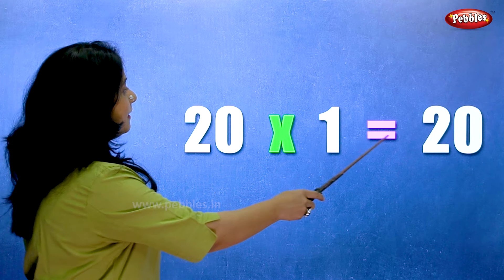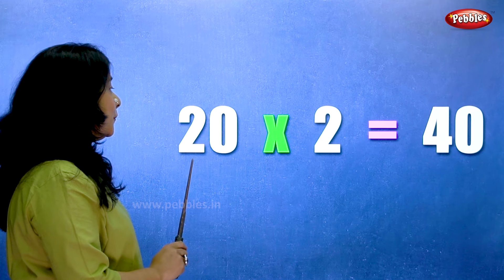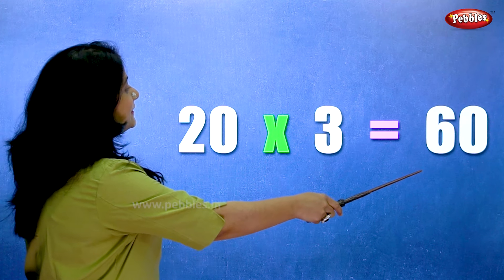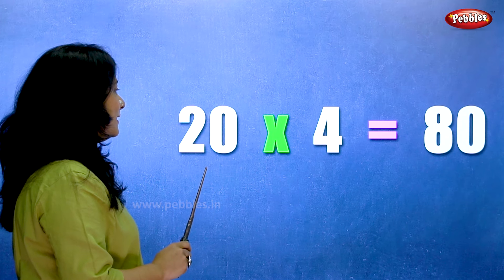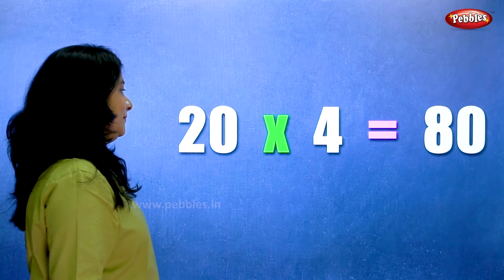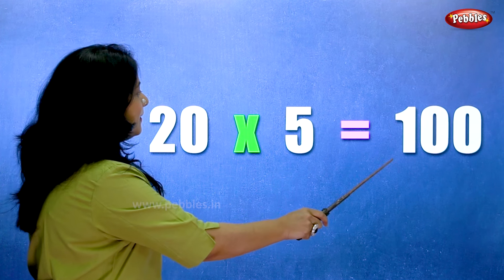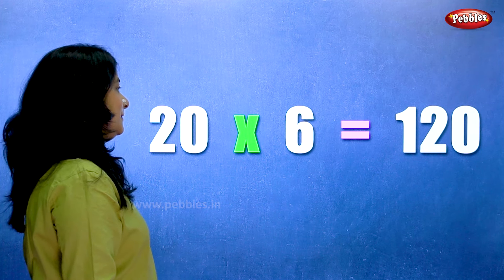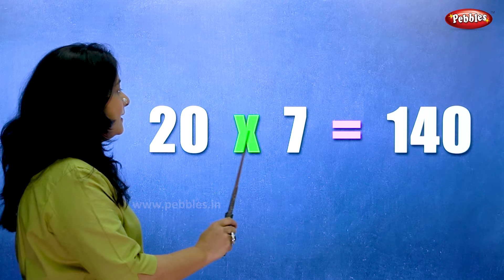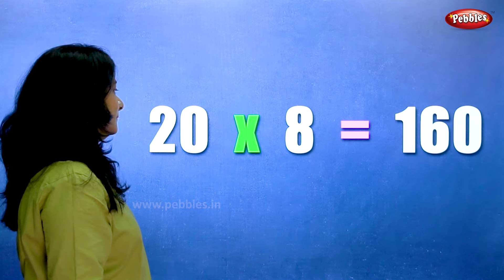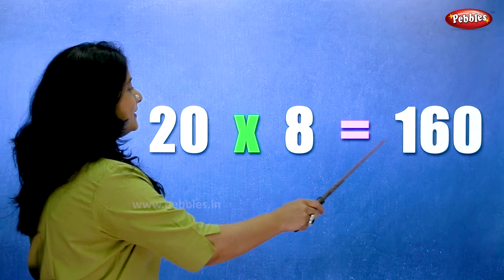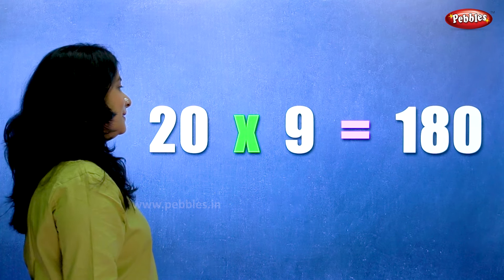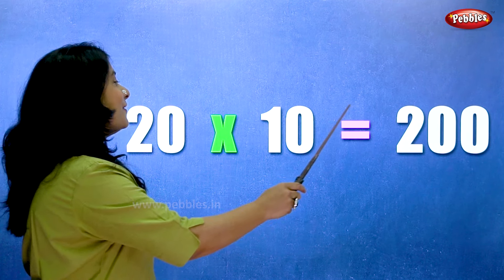Twenty ones are twenty. Twenty twos are forty. Twenty threes are sixty. Twenty fours are eighty. Twenty fives are hundred. Twenty sixes are one twenty. Twenty sevens are one forty. Twenty eights are one sixty. Twenty nines are one eighty. Twenty tens are two hundred.